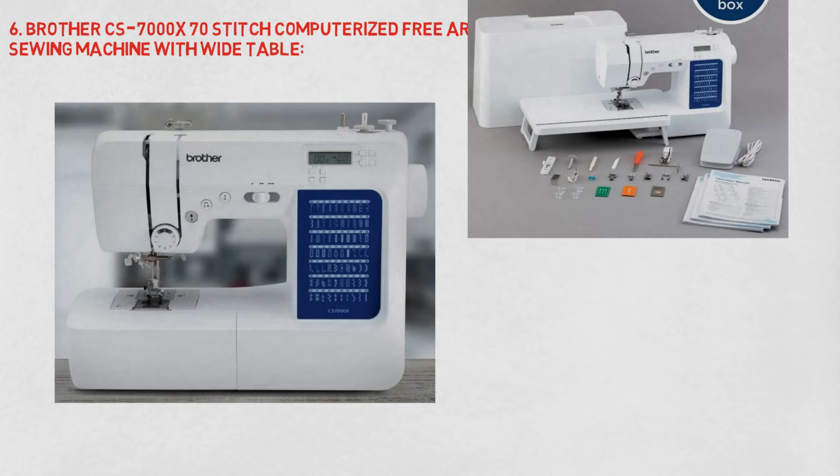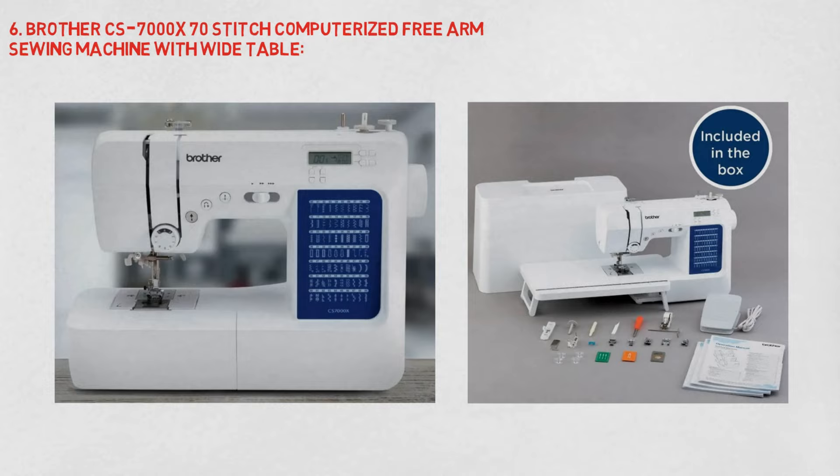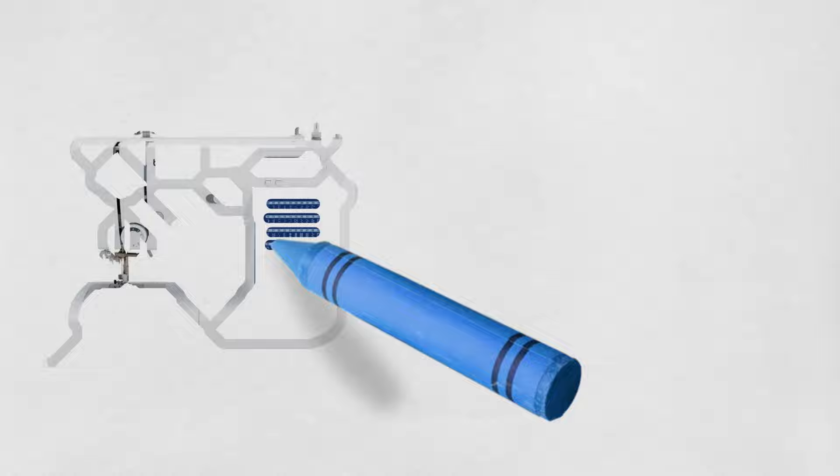With practical features like the LCD display, new, higher-end automatic needle threader, clear threading diagrams, quick-set bobbin system, and adjustable sewing speed control, the CS7000X is built for ease of use.